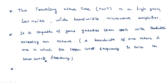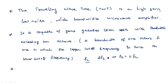For one octave bandwidth, the relation between the cut-off frequencies is: FH equals 2 FL, where FH is the upper cut-off frequency and FL is the lower cut-off frequency. So the upper cut-off frequency is twice that of the lower cut-off frequency.